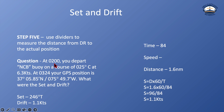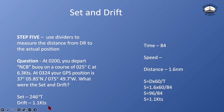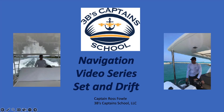So, at 0200, we departed NCB buoy on a course of 025 compass at 6.3 knots. At 0324, our GPS position showed us at 37 degrees 05.85 minutes north, 75 degrees 49.7 minutes west. What were our set and drift? Our set was 246 degrees true, and our drift was 1.1 knots. This concludes our set and drift video in our navigation video series. Please check our YouTube channel for other videos.